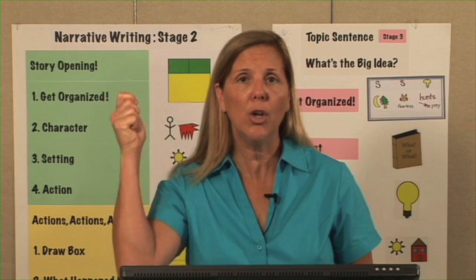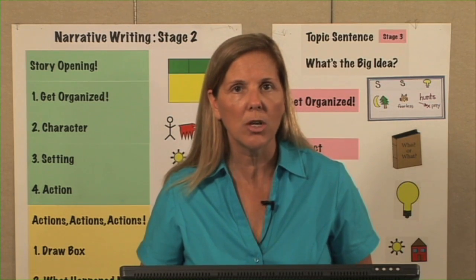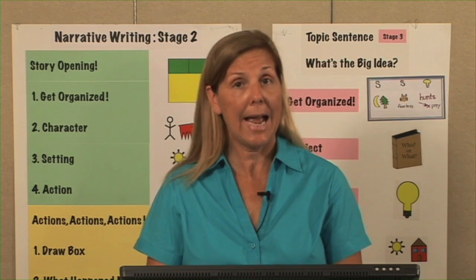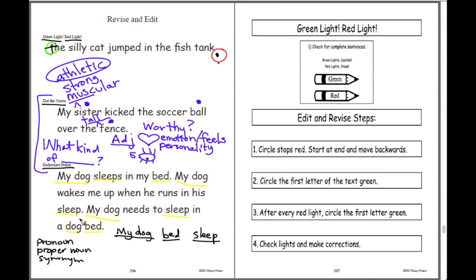I could use a pronoun, proper noun, or a synonym. If it's pronoun or proper noun, it has to be a noun — all these words were nouns. I'm going to go back and say 'my dog.' What's a pronoun? Well, I know my dog's a boy, so I could use 'he.' Proper noun — my dog's name is Rover, so I could use 'Rover' to replace 'my dog.' Synonym — I could use 'pooch,' 'pet,' 'best friend.' There are many different ways I could say that.